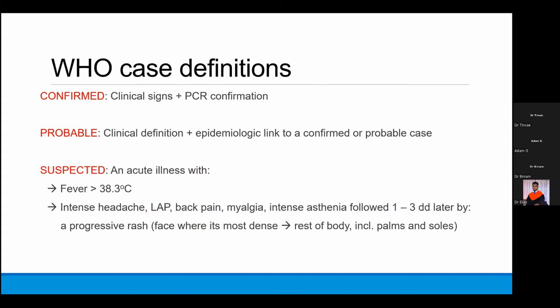The WHO case definition for monkeypox: a confirmed case requires clinical signs and PCR confirmation. A probable case requires symptoms and a contact history. A suspected case is a patient with fever, intense headache, lymphadenopathy, back pain, intense fatigue, followed one to three days later by a progressive rash starting from the face, to the extremities, then to the rest of the body.